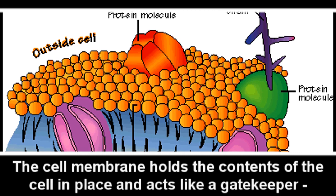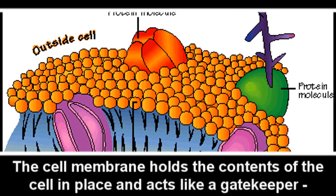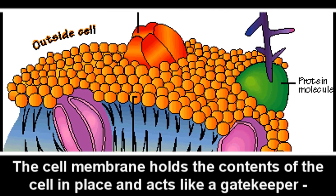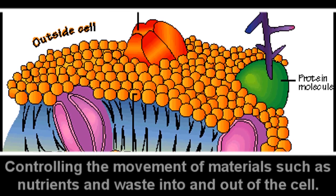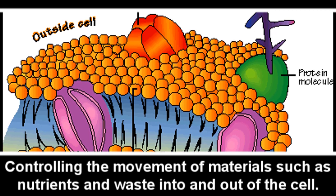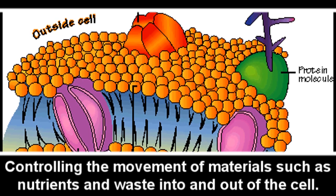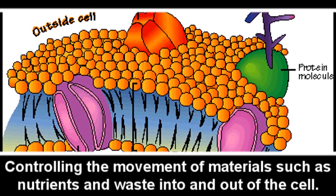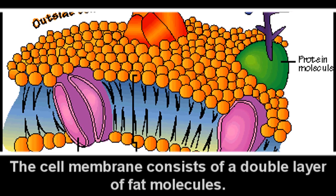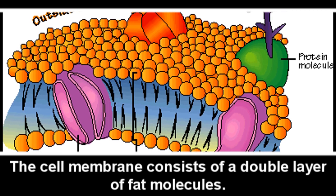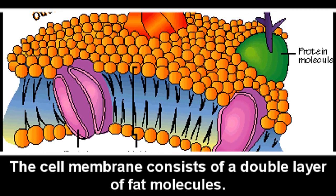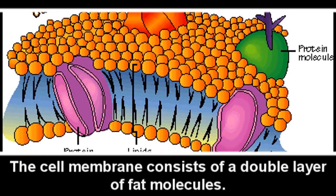The cell membrane holds the contents of the cell in place and acts like a gatekeeper, controlling the movement of materials such as nutrients and waste into and out of the cell. The cell membrane consists of a double layer of fat molecules.